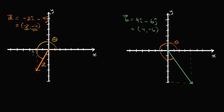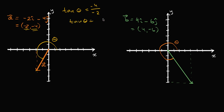Let's figure out what theta is. We've seen before that when we're thinking about vectors drawn in standard form, we can say the tangent of this angle is going to be equal to the y component over the x component. So the y component is negative four, and the x component is negative two. This comes straight out of the unit circle definition of trig functions — tangent of theta equals the y coordinate over the x coordinate of where a line defining an angle intersects the unit circle. So tangent of theta is equal to two.